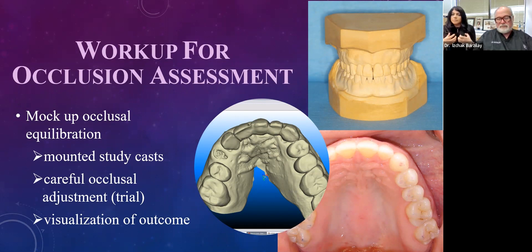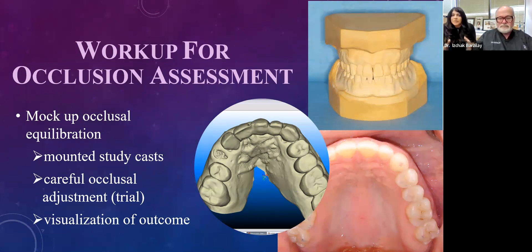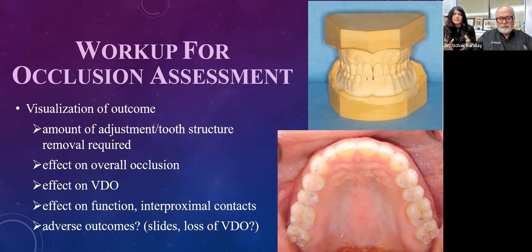Whenever we're looking at changes to occlusion — whether to optimize bite forces, force distribution, or achieve stable occlusion — there is always a need for a mock-up occlusal equilibration. Mounted models, mounted study casts, and careful trial occlusal adjustment on the models help visualize outcomes. Will it affect the vertical dimension of occlusion? Will it resolve the patient's problem, or cause new ones?